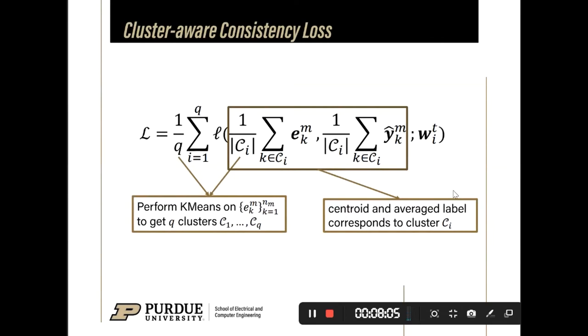And client M just needs to share Q centroids and the averaged label corresponding to each cluster with client I. The Q centroids and the averaged labels are the representative data. The models in client I and client M should make consistent predictions for this representative data.